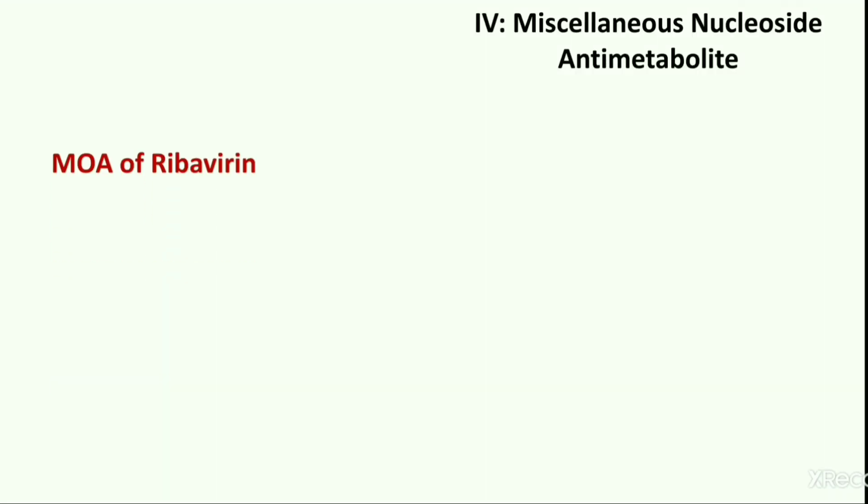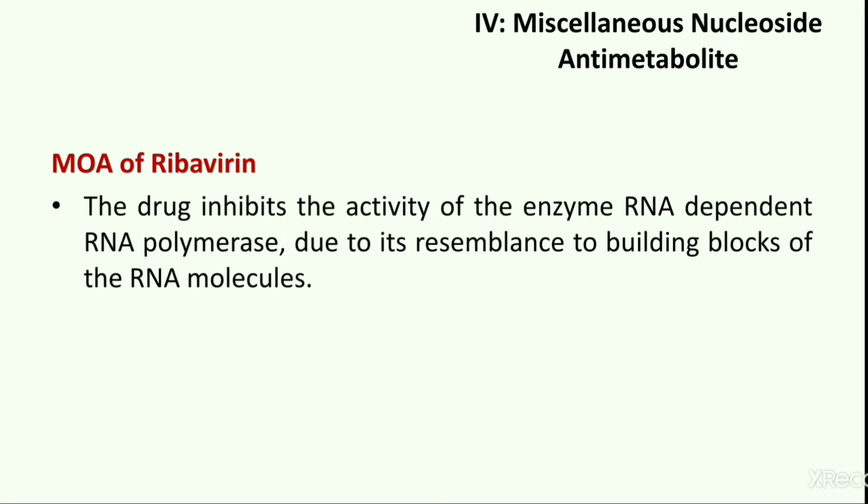Last is the mode of action of ribavirin. Ribavirin is a guanosine analogue reported to have several modes of action that lead to inhibition of viral RNA and protein synthesis. Ribavirin is phosphorylated by host cell adenosine kinase to its most active form, ribavirin triphosphate. This triphosphate form inhibits the activity of the viral RNA polymerase because of its resemblance to the RNA molecule. Thus ribavirin inhibits the replication of a wide variety of RNA and DNA viruses.